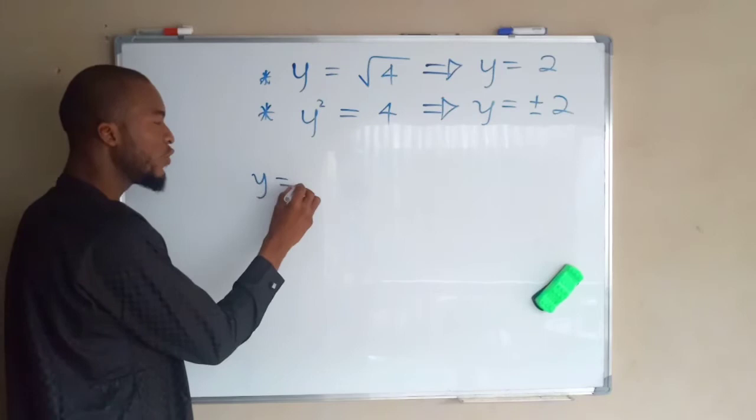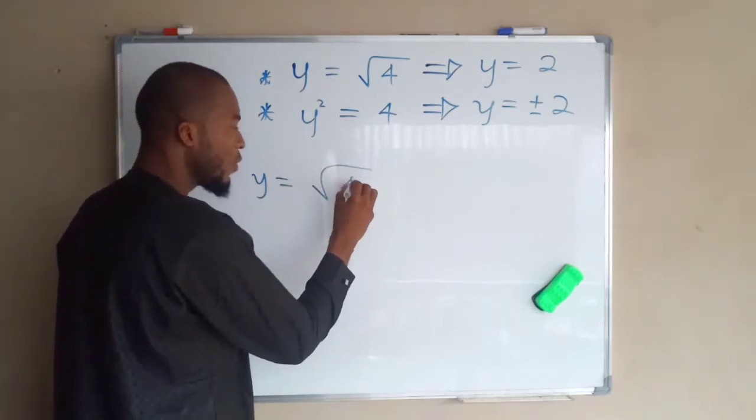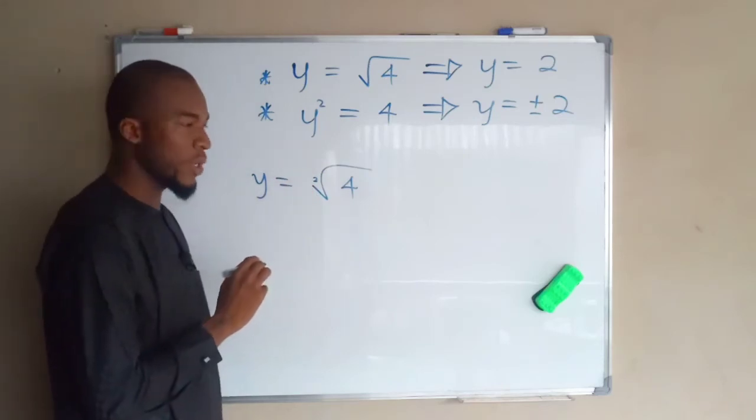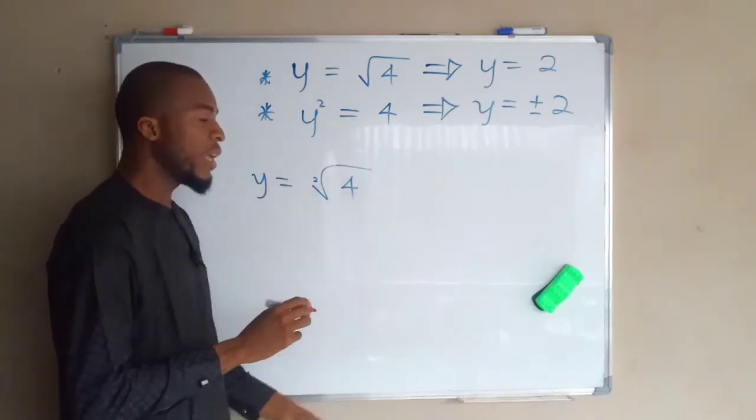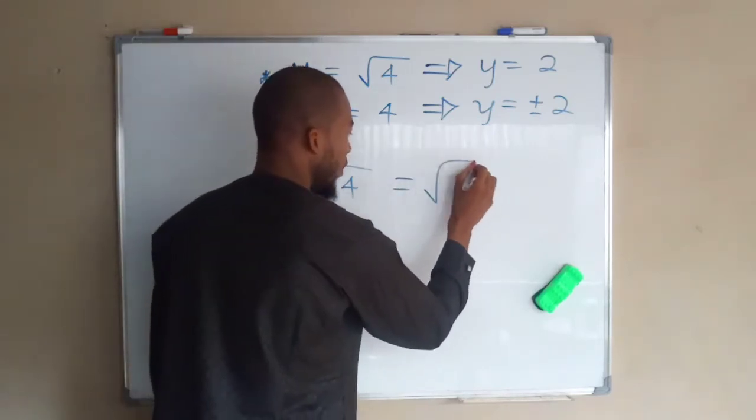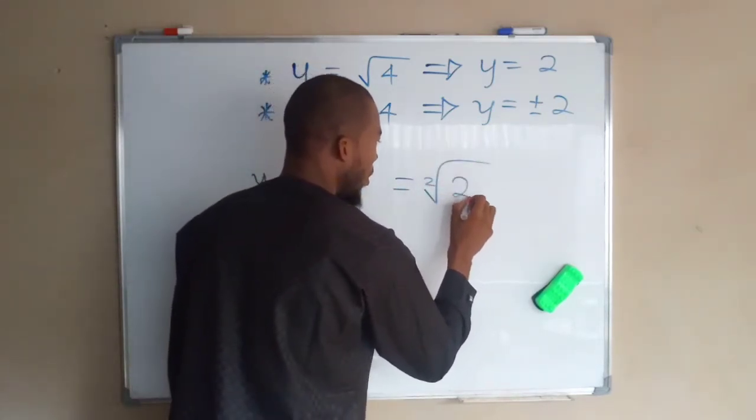If y equals square root of four, you know naturally that square root has an index of two. This is a perfect square number; it can be transformed to an index form of two to the power of two.